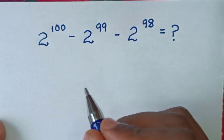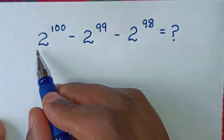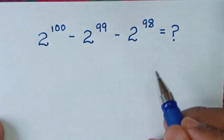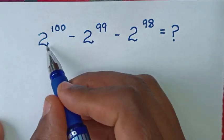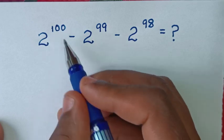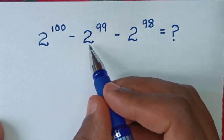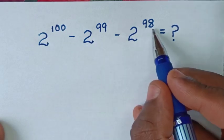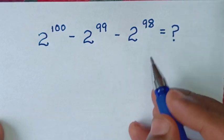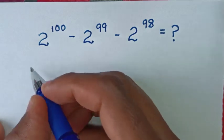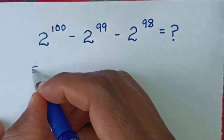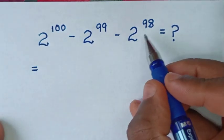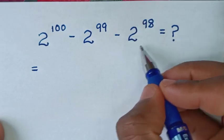Welcome. We are going to solve this math problem: 2 to the power of 100 minus 2 to the power of 99 minus 2 to the power of 98. From here, 2 power of 98 is the smallest term.